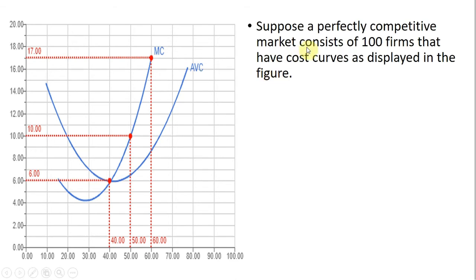All right, so we have a perfectly competitive market consisting of 100 firms, each identical to the one pictured here. Given that information, let's derive the market supply curve. What would be the total quantity supplied in the market at various prices?